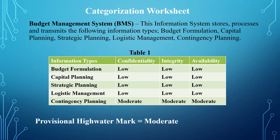The availability impact level being low means there is going to be a minor adverse impact to the system, to the business mission, and to the organization should there be a disruption of access to budget formulation information.